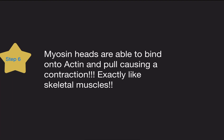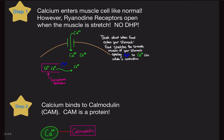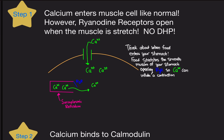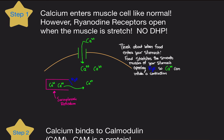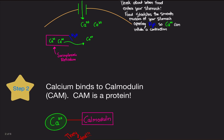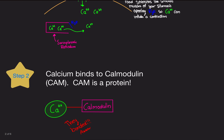Finally, the myosin heads are now able to bind on the actin and pull, causing the contraction — just like in skeletal muscles. To recap: calcium enters the cell; ryanodine receptors open with stretch rather than through DHP receptors; calcium floods into the sarcoplasm; calcium binds to calmodulin — also called CaM — which is a protein.